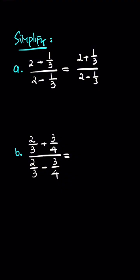In order to remove the fractions, you can multiply by 3 for each of them, times it one by one. Then this is going to be 6 plus 1 out of 6 minus 1. Then this is 7 out of 5.